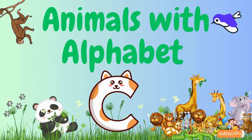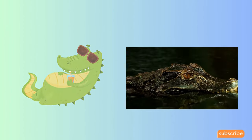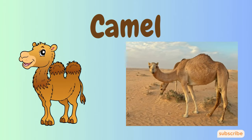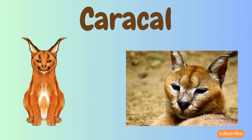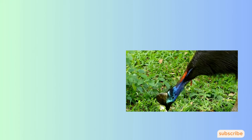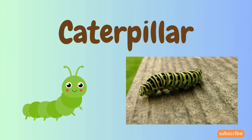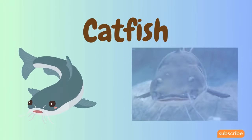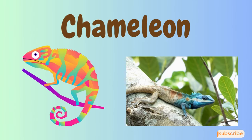Animals with Alphabet C. Caiman. Camel. Capybara. Caracal. Cassowary. Cat. Caterpillar. Centipede.